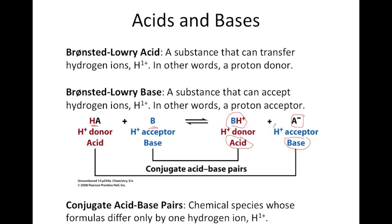BH⁺ is now acidic — it has a proton which it can donate. And A⁻, our conjugate base, can now accept a proton. So this is a reversible reaction in most cases. The acid, once it loses a proton, forms a conjugate base, and the base upon accepting a proton forms a conjugate acid.